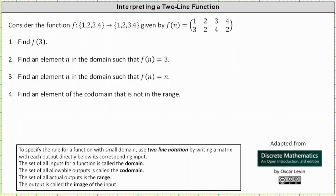We're now to consider the function f that maps the set with elements one, two, three, and four to the set with elements one, two, three, and four, given by the function shown in two-line notation. For a quick review, to specify the rule for a function with a small domain, we can use two-line notation by using a matrix as shown above, with each output directly below its corresponding input.